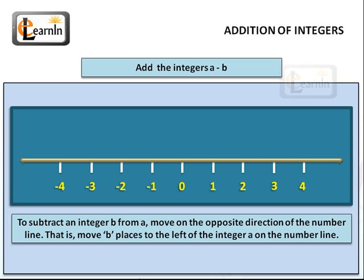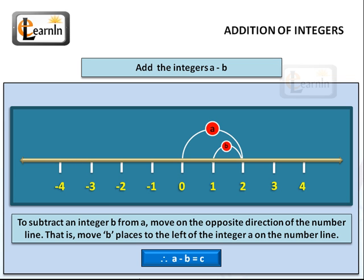We can also use the number line to subtract an integer. If we want to subtract an integer b from another integer a, we move in the opposite direction on the number line — that means we move b places to the left of the integer a. So basically, if we're adding an integer to another integer, we move to the right on the number line, and if we subtract an integer from another integer, we move to the left of the number line from that original integer.